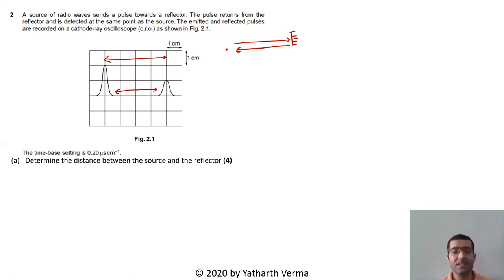The time-base setting is given. Time-base setting means the x-axis: 0.20 microseconds per centimeter. So this is one centimeter, two centimeters, three centimeters, four centimeters. That means between the two signals there is four centimeters. Determine the distance between the source and the reflector. When the wave is going and coming back, this is the distance d. It's going a distance d and then coming back a distance d also.